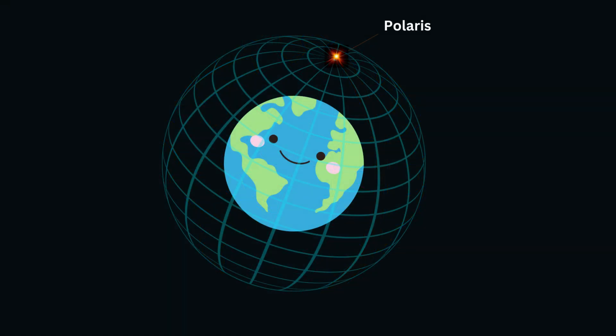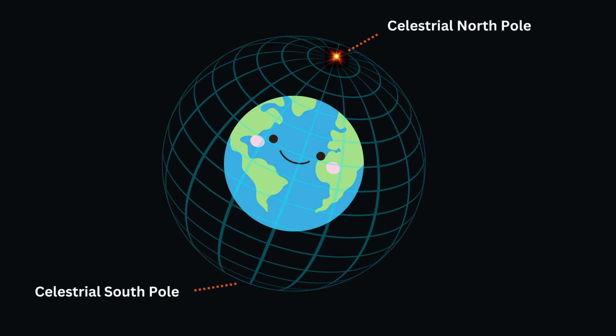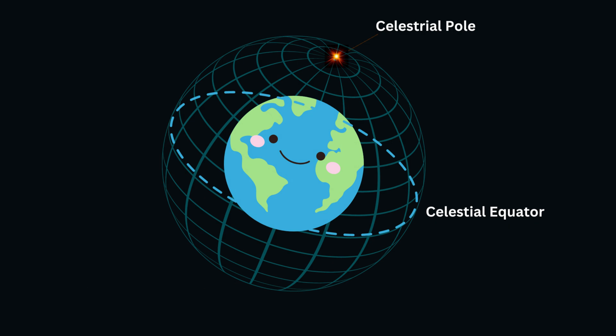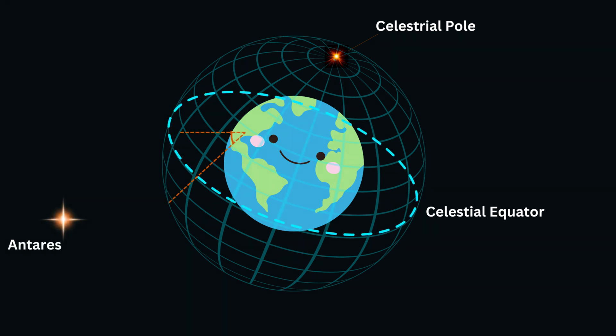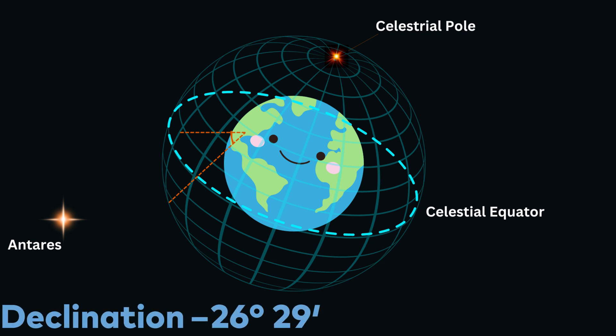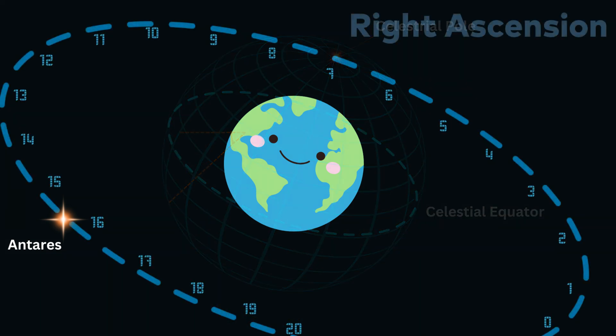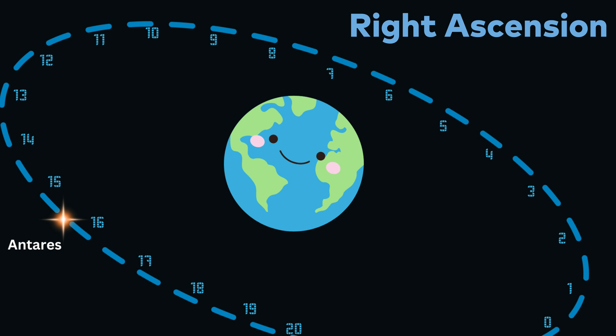For astronomy, the sky has a similar coordinate system. There's a celestial north pole and a celestial south pole, and halfway in between is the celestial equator. To help find objects in the night sky, we describe celestial objects either north or south of the celestial equator in degrees. If the object is south of the celestial equator, we use negative degrees. For example, Antares is negative 26 degrees and 29 minutes south of the celestial equator. Right ascension is similar to longitude on earth at the prime meridian in Greenwich, England. The meridian on the celestial sphere is determined by where the sun falls on the celestial equator at the spring equinox.